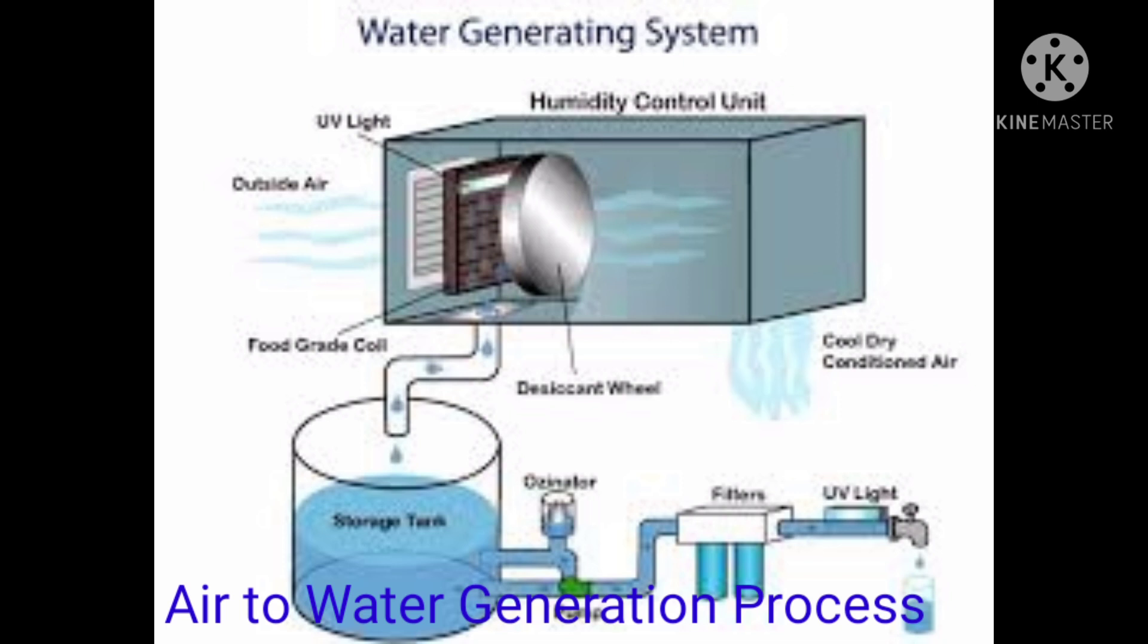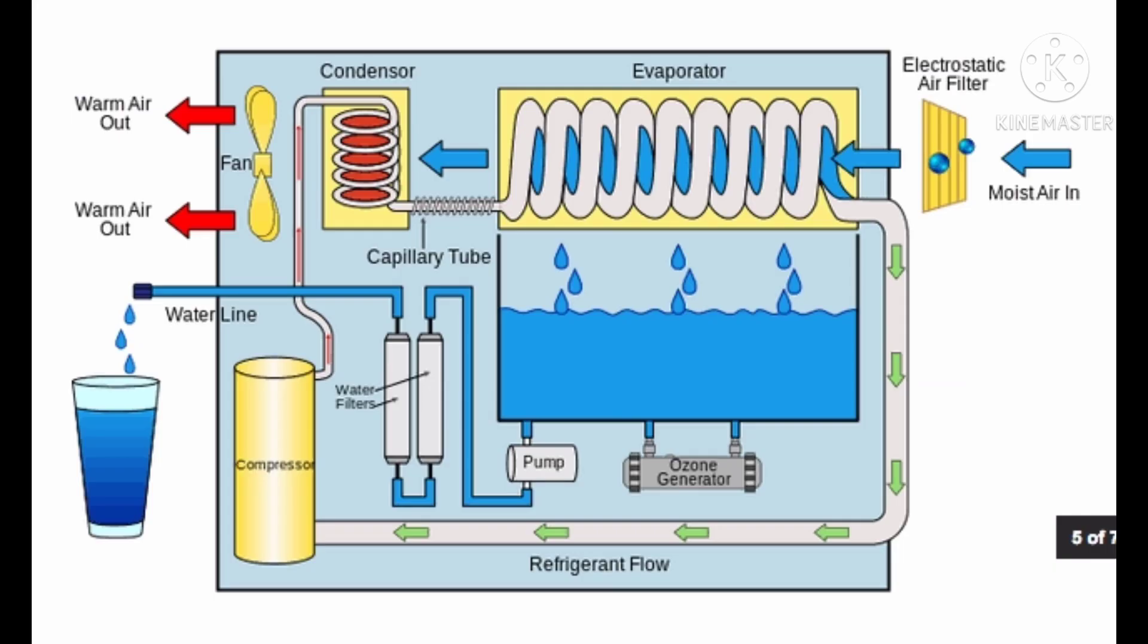Now, what is the price of atmospheric water generator? Prices start at $18,000 for the generating 40 vehicle model and $30,000 for the larger generating 350 ground unit.